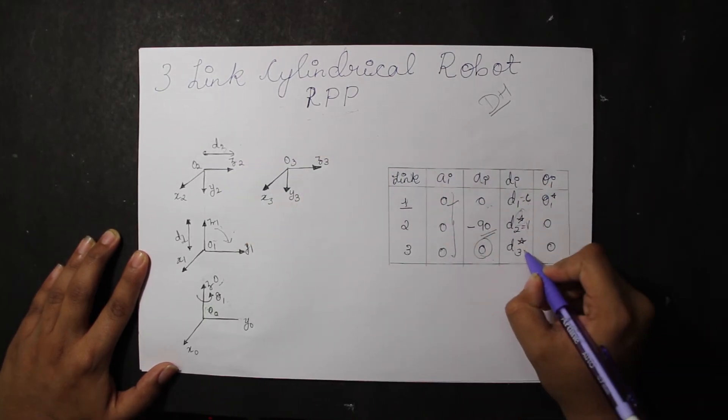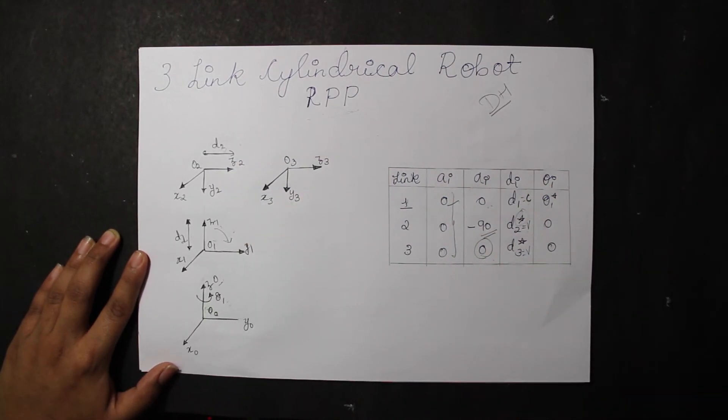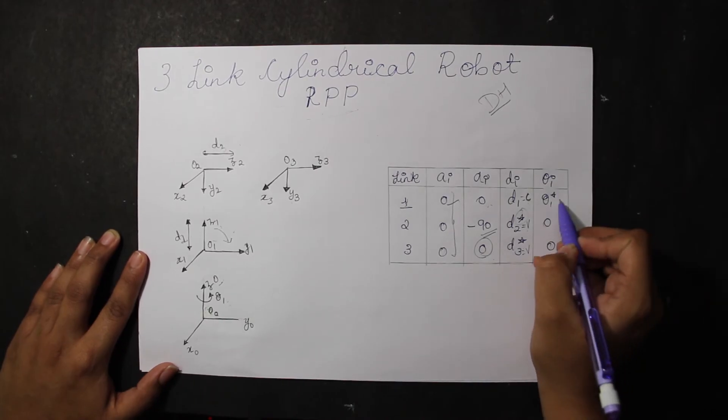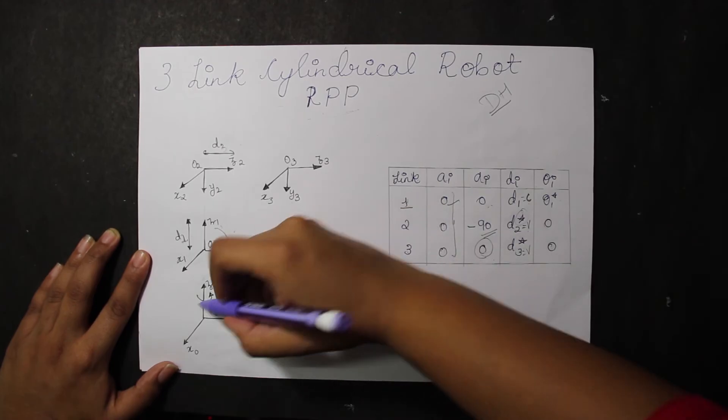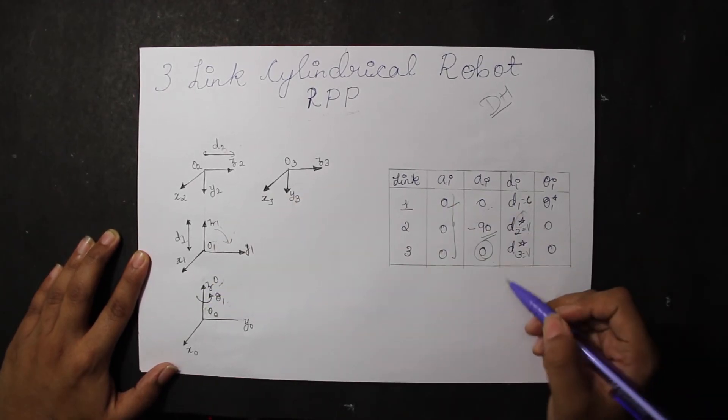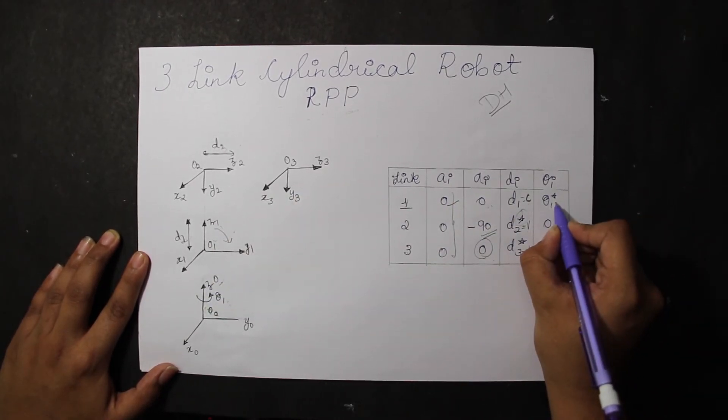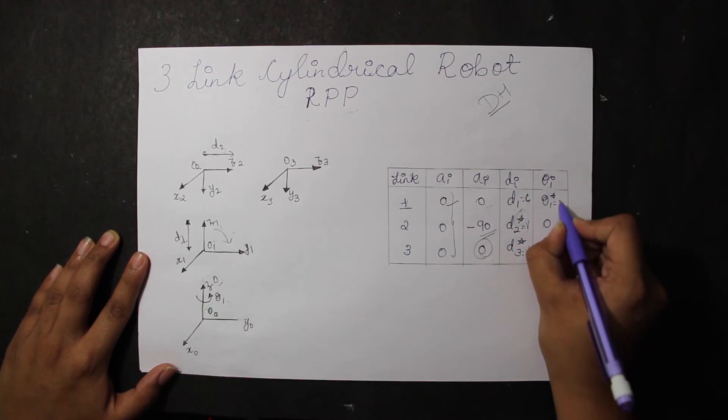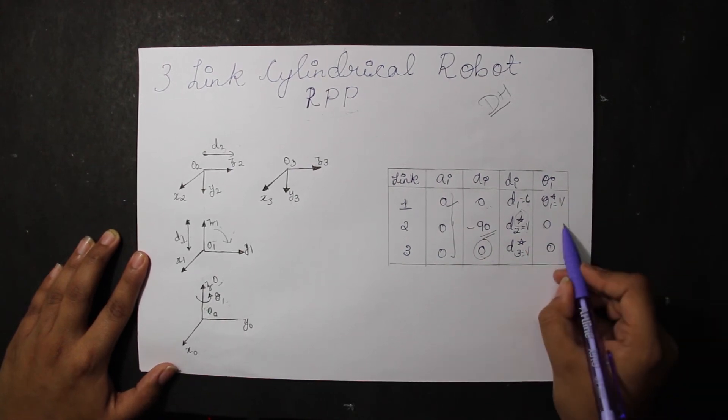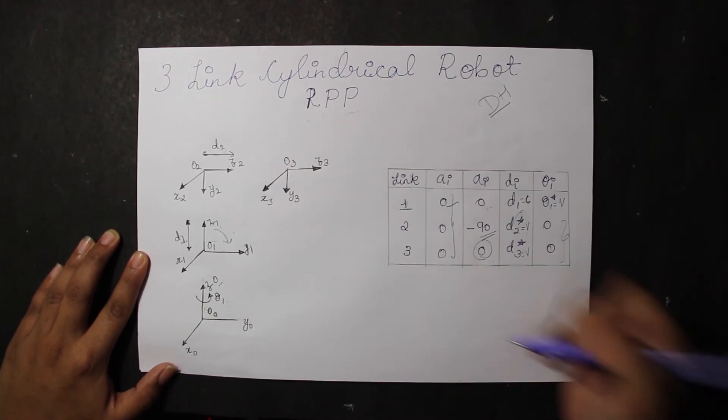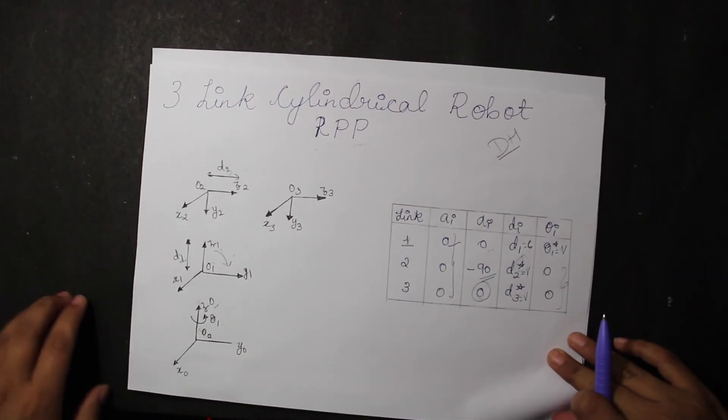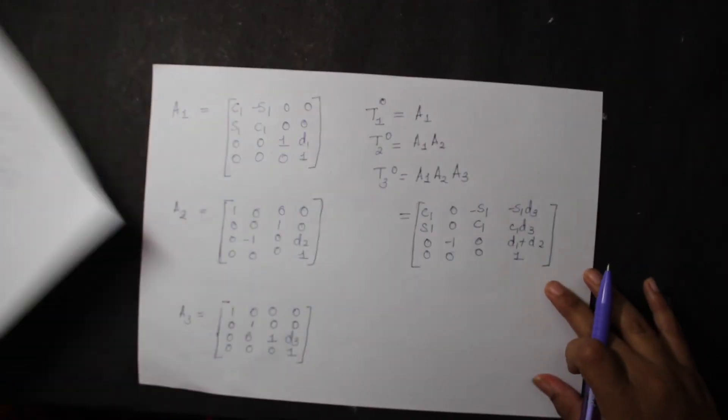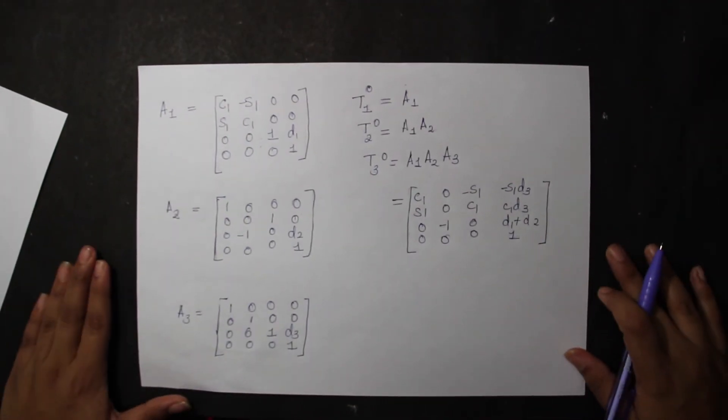Similarly, for theta value, that is the joint angle, we have that it is rotated by an angle of theta. Since it's a rotational joint, we have theta value theta 1 as variable. The rest of them are 0 since they don't have a rotational joint. So this is our basic information which we'll be needing to formulate A1, A2, and A3.